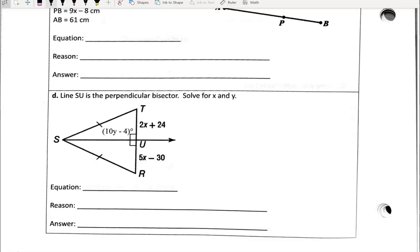I'm going to let you do C by yourself. Let's take a look at D. Line SU is a perpendicular bisector, solve for X and Y. If it's a perpendicular bisector, we can see these right angles here are marked already. This side is a right angle over here, and this side is a right angle over here.